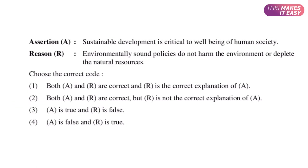Let's look at another question. The assertion says sustainable development is critical to the well-being of human society — that's true. The reason says environmentally sound policies don't harm the environment or deplete the natural resources — that is also true. So the answer comes in the first two options. Reading it as 'assertion is true because reason is true': sustainable development is critical to well-being because environmentally sound policies don't deplete natural resources. That reason doesn't make sense, so the answer is option two — both A and R are correct but R is not the correct explanation of A.